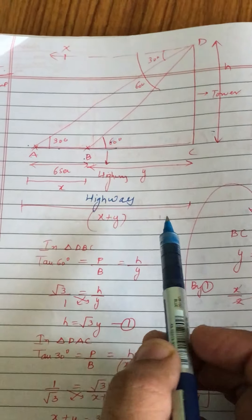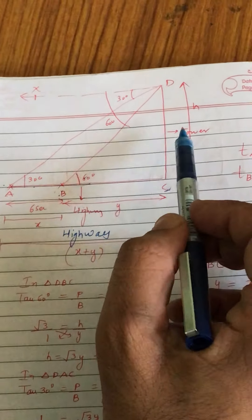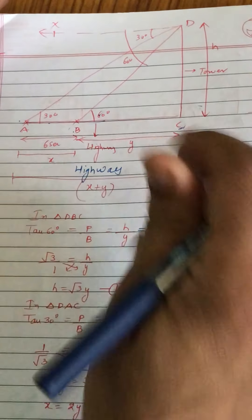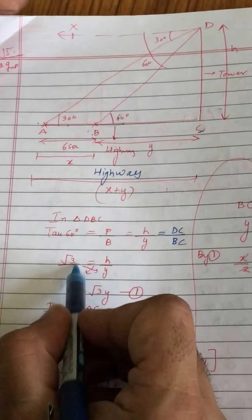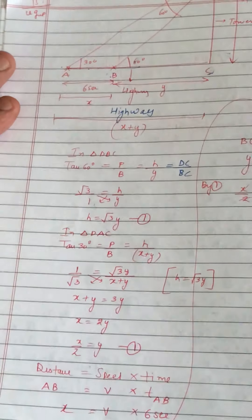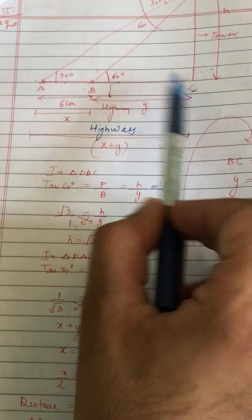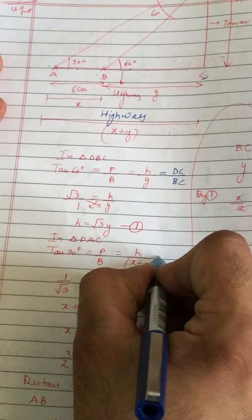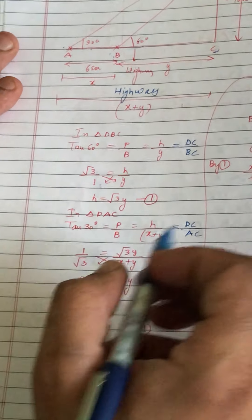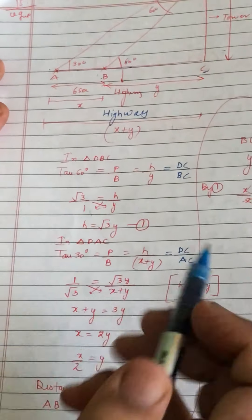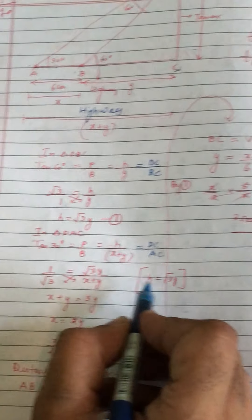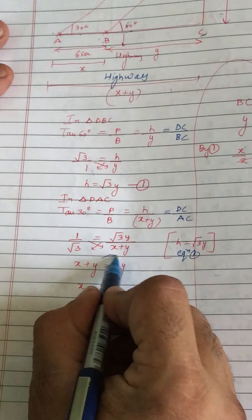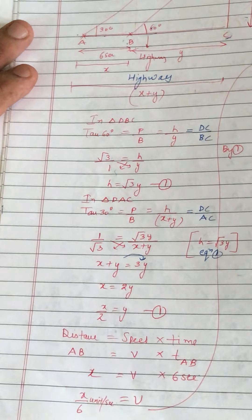Sabse pehle triangle DBC mein lagaiye tan60° equal to P upon B, yani DC upon BC. DC hai small h, aur BC hai y. Cross multiply kijiye: H aajayega root 3y — equation 1. Iske baad poore triangle DAC mein lagaiye tan30° equal to P upon B, yani DC upon AC. 1 by root 3 = h upon (X plus Y). H ki value root 3y thi (equation 1 se), substitute karo: X plus Y = 3y. Y ko right mein le jaiye: X equal to 2y, Y aajayega X by 2.